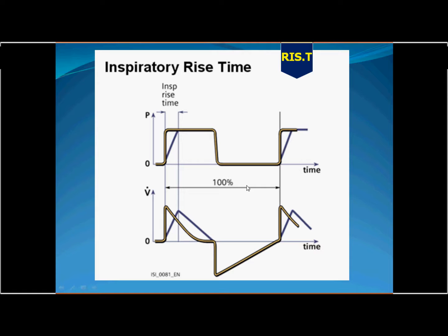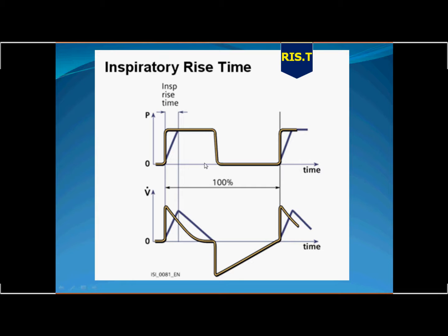When the patient is on an IE ratio, the rising time is expressed as a percent of the duty cycle. If the rising time percent is larger, it takes a longer time to reach the preset pressure, leaving a smaller remaining time for inspiration. Conversely, if the rising time is smaller, the inspiratory time will be larger.